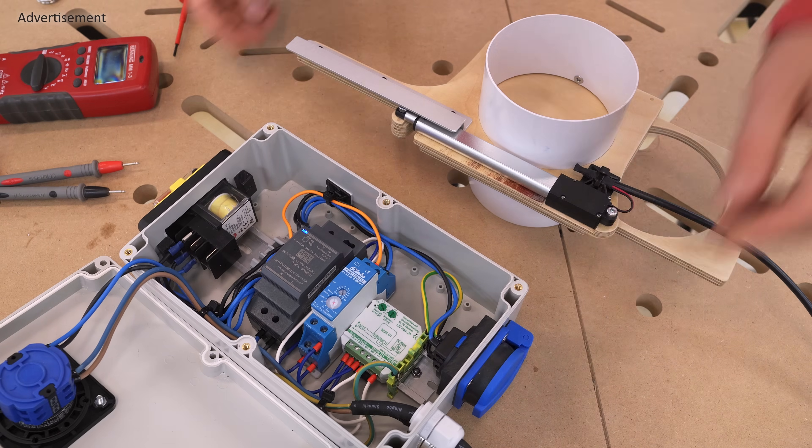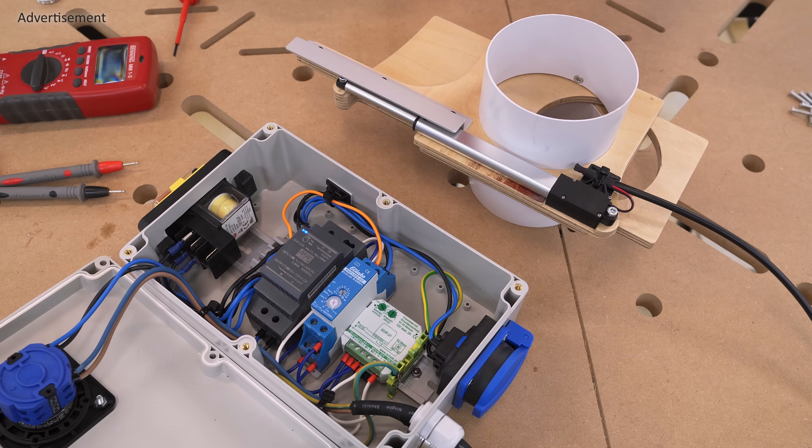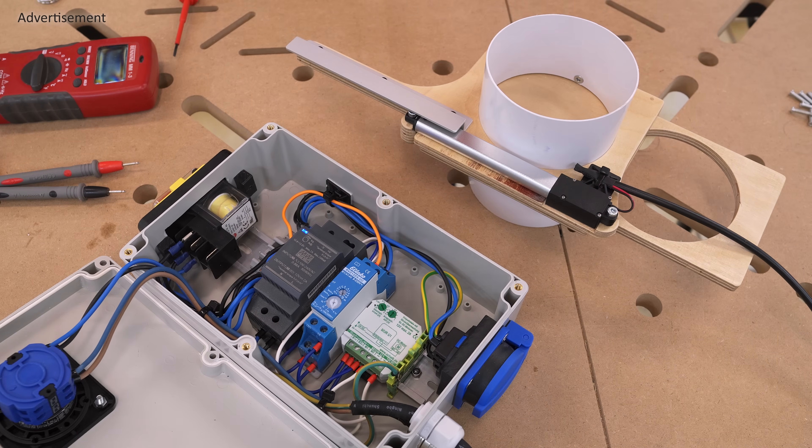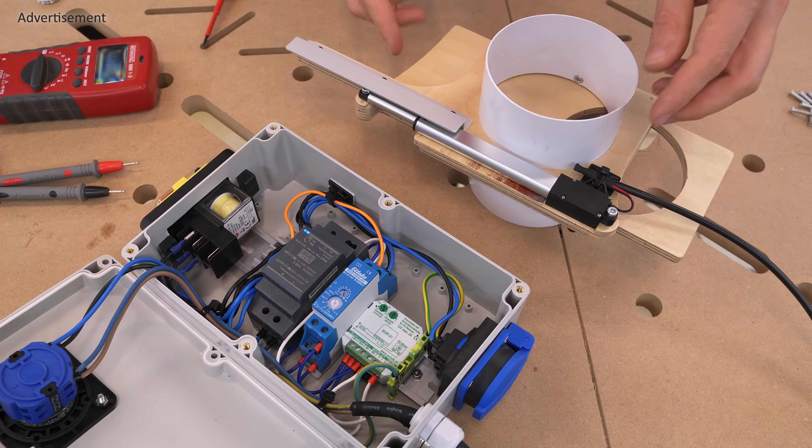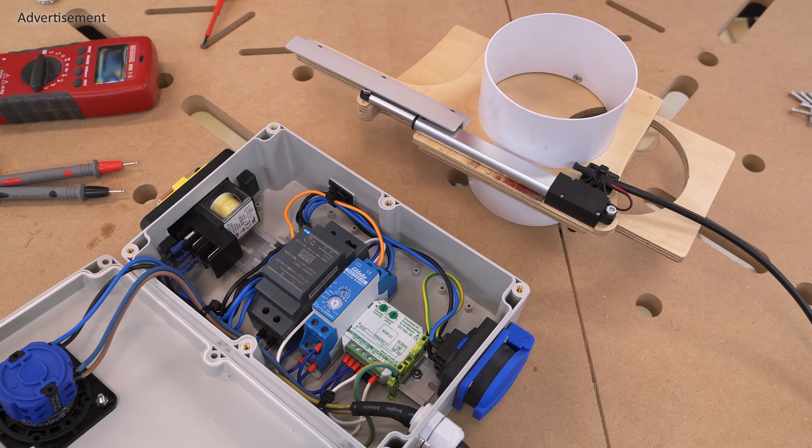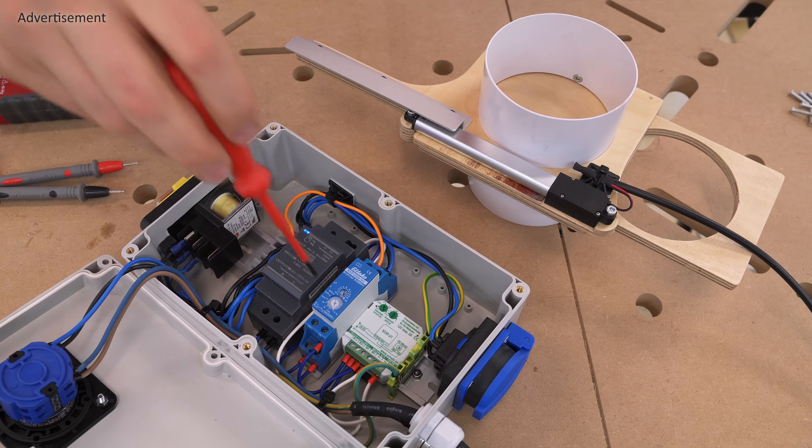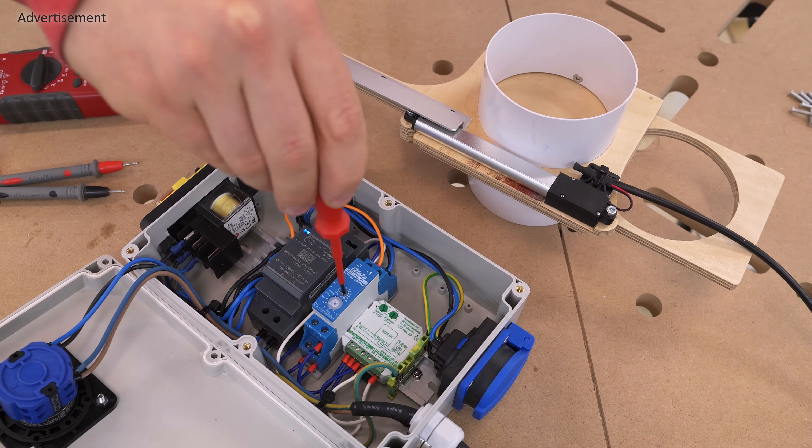And now I can set the amperage at which I want the blast gate to stop in case of a collision. And I think I can give this a little bit more oomph. And setting the delay to 5 seconds times 2.